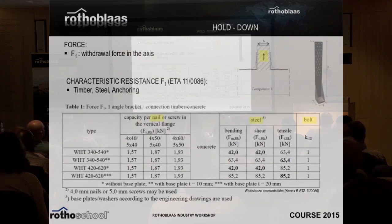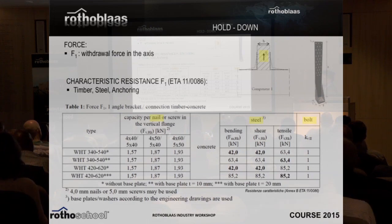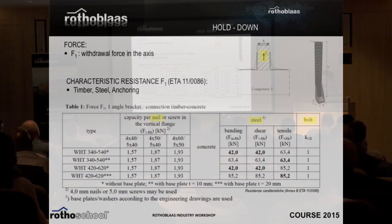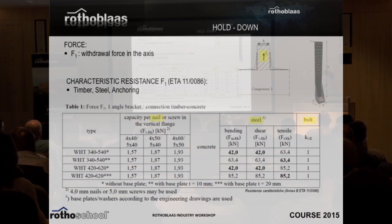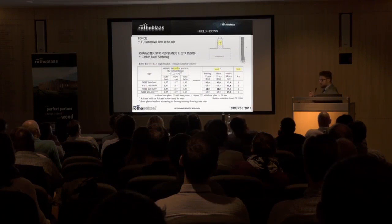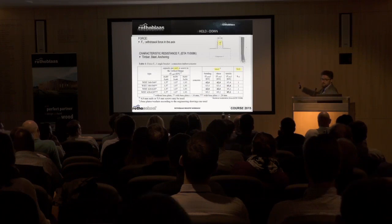For hold downs the principle is the same. If you take the ETA of the hold down — in this case the WHT — you can see straight away the resistance given. For example, nails 4 × 60 — standard nails — give a characteristic resistance of about 2 kN. Then there is resistance for steel and for bolts. The final resistance will be the lowest of the three. What is the real work of the designer? Just to use the right factor to pass from characteristic to design values — using the correct gamma factor for each failure mode.